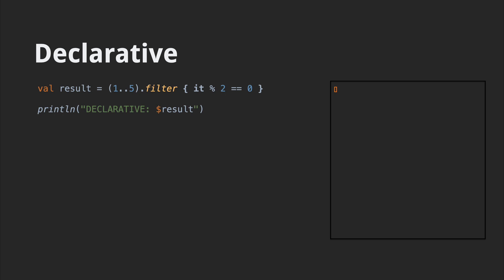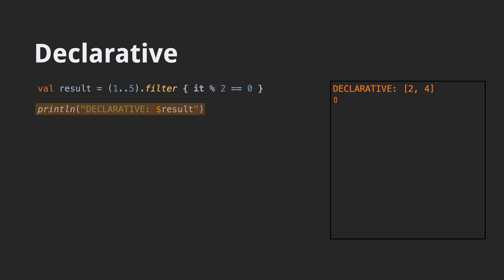If imperative is how to make an omelet — take out the pan, start the oven, put butter in the pan, take out the eggs, etc. — declarative is going to the restaurant and ordering two eggs over easy. Here, we declare that we want to filter numbers dividable by two from our sequence, and then we're done. Simple. Kotlin's collection API is full of declarative goodness.